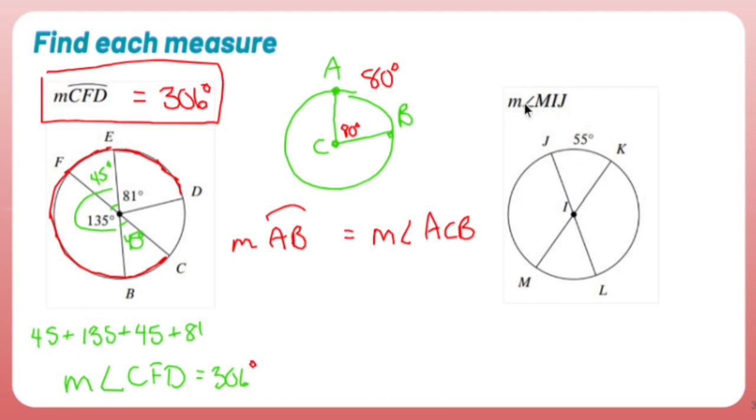Let's see if this one's a little bit more friendly. The measure of angle MIJ. MIJ is this angle right here. I don't have any angle measurements. I have this arc measurement, and arc JK is 55, which means its central angle created by it, IJIK, is also 55.